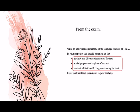This is the outline from the exam at the end of the year — the things you should comment on. First is the stylistic and discourse features of the text, second is the social purpose and register, and third is the contextual factors that affect or surround the text. You need to refer to at least two subsystems, but don't worry about that too much because you will naturally do that anyway.